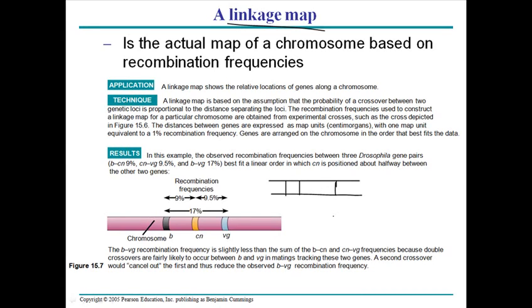Those non-coding sequences don't function as genes or encode proteins. Within chromosomes, genes are separated from each other by different nucleotide sequences. For example, suppose there is a seven nucleotide sequence difference between two genes — we call that a seven map unit — and a ten nucleotide difference gives ten map units. So the distance between genes is measured by the nucleotide sequences that separate them.